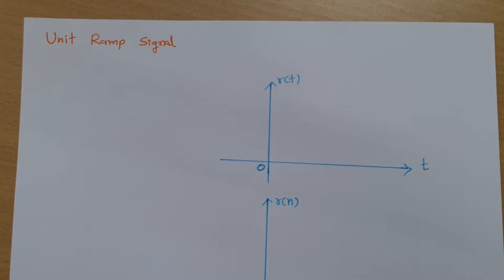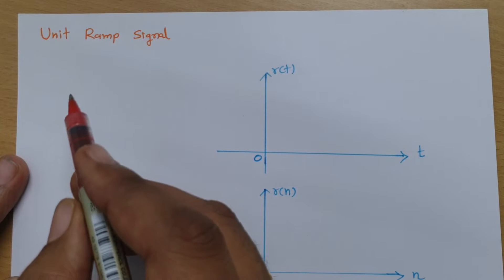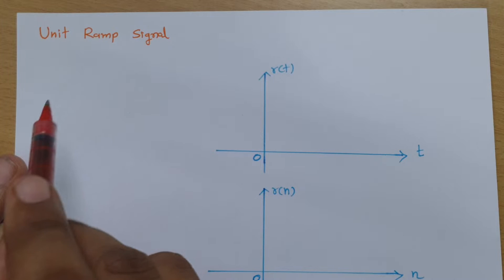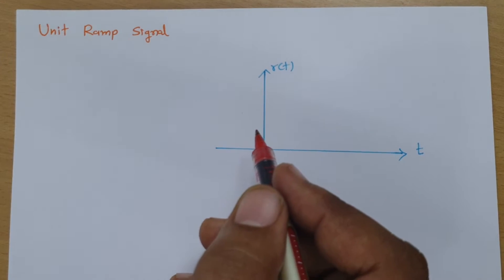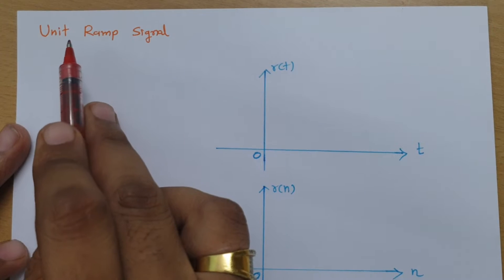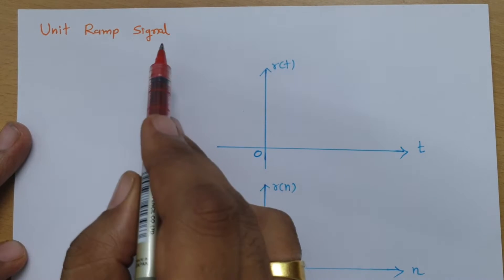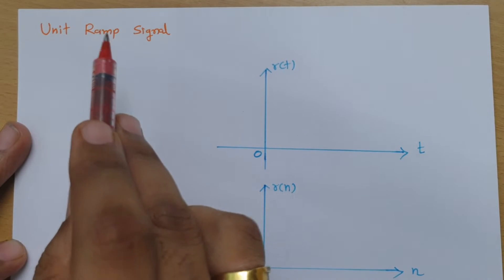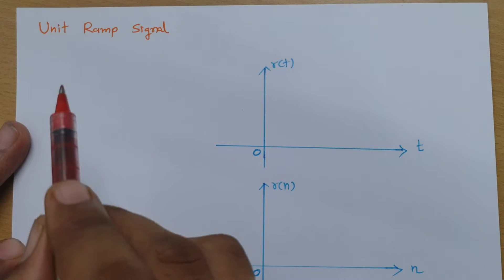Welcome to the signal and system playlist. In this session I will be explaining the unit ramp signal — first the basics, how we can define it, its graphical representation, and then how we can derive the step signal and impulse signal from the unit ramp signal. So the relationship of ramp with step and ramp with impulse — these are the basics I will be discussing in this session.